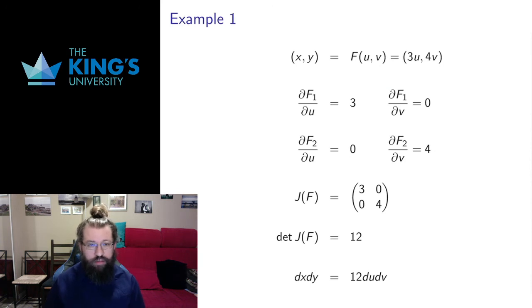I want to finish this video by calculating some Jacobian terms. In the next video, we'll get into some actual examples of change of variables for integration. So here's the situation. Again, the old variables are going to be the output, the dependent variables. The new variables are going to be the input.